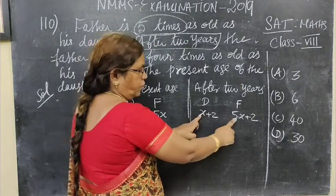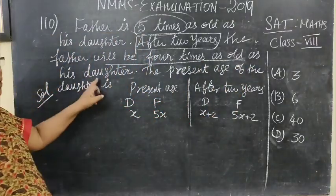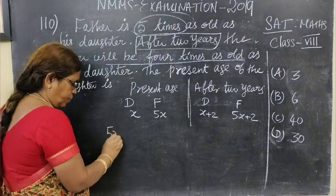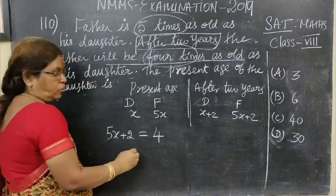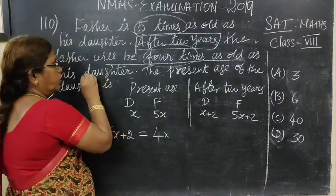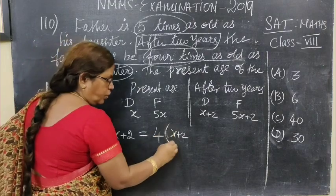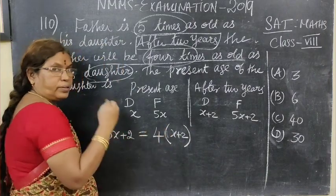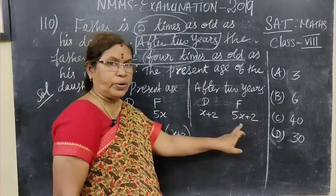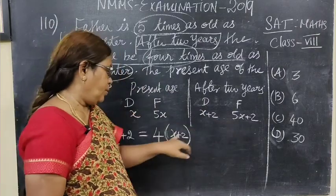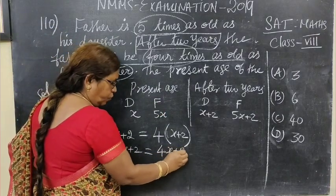After 2 years, daughter's age is X plus 2 and father's age is 5X plus 2. The condition given is: father will be 4 times as old as daughter's age. So father's age 5X plus 2 equals 4 times daughter's age, which is 4 into (X plus 2), giving 4X plus 8.